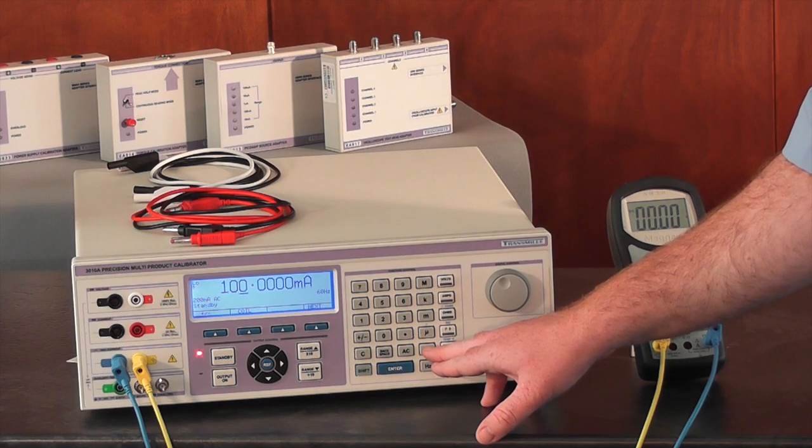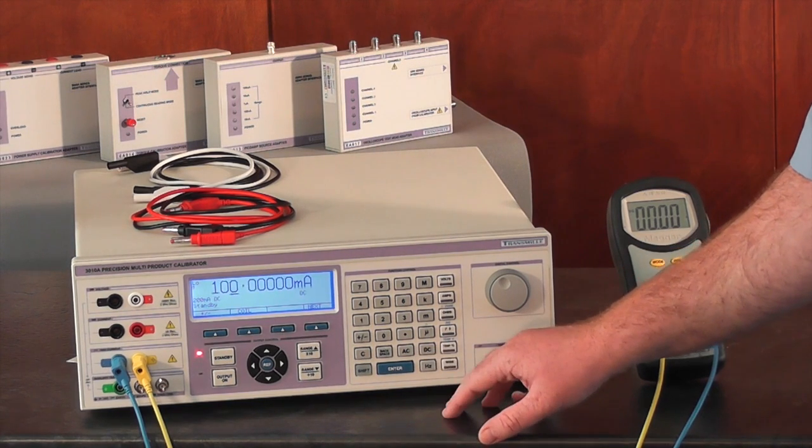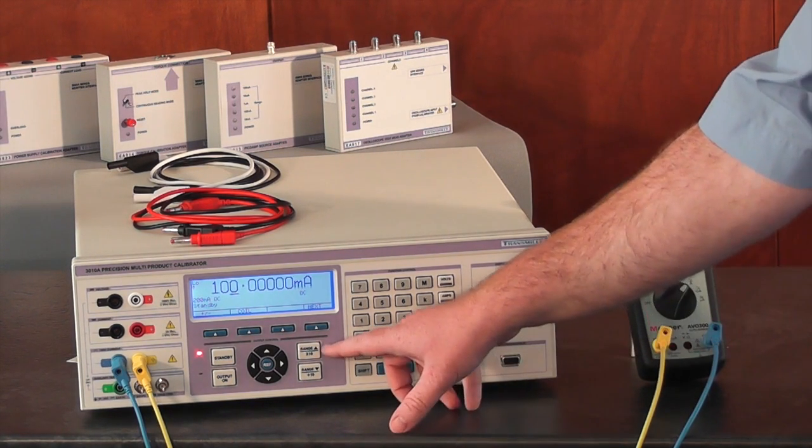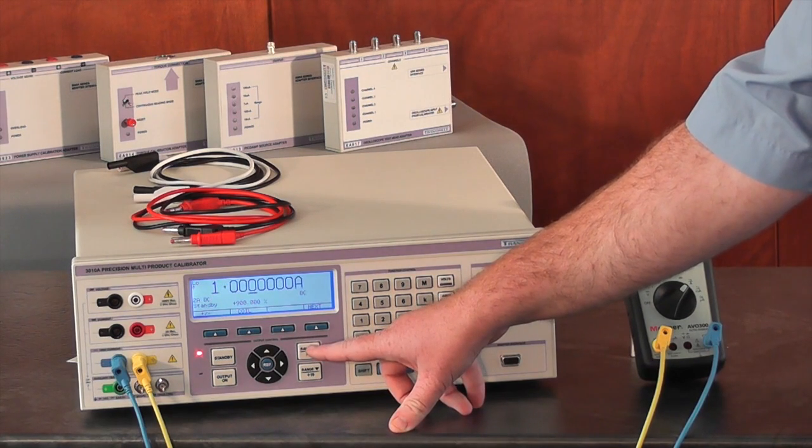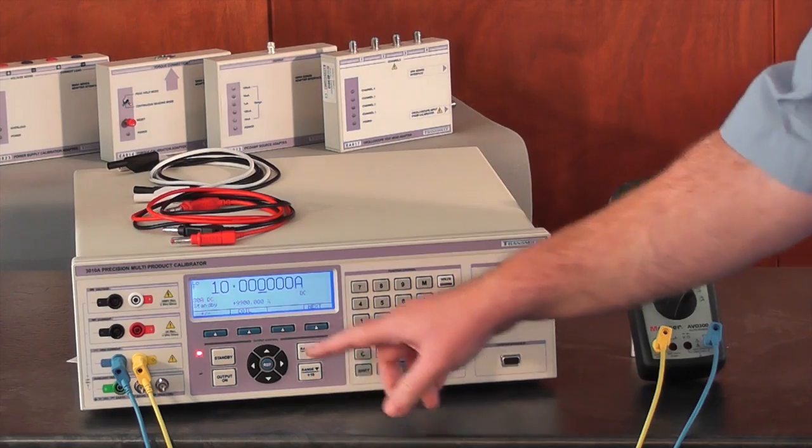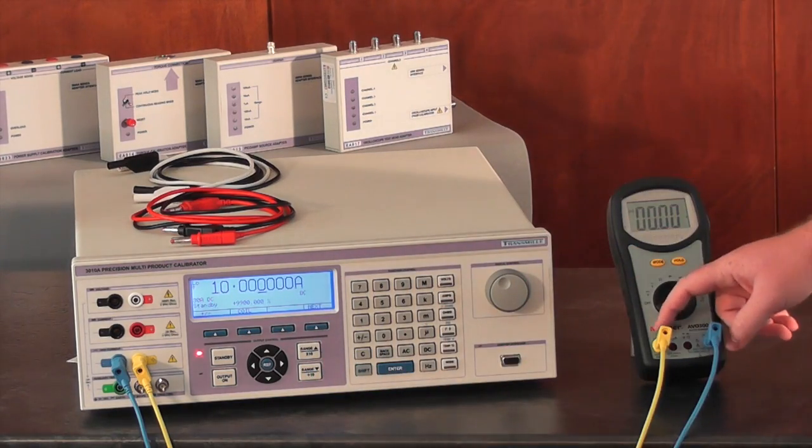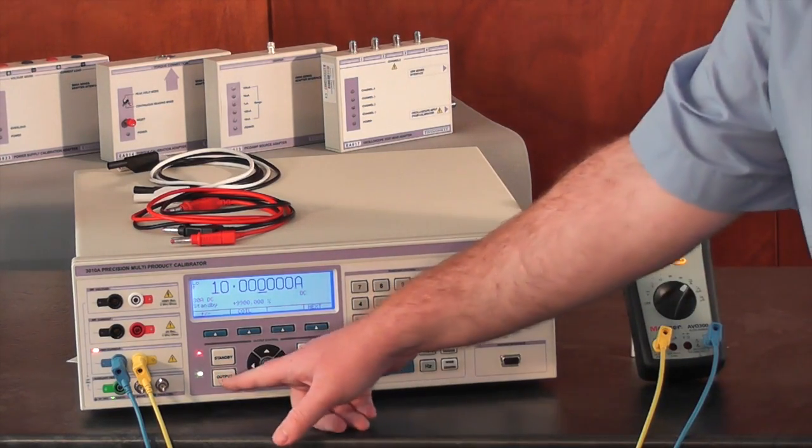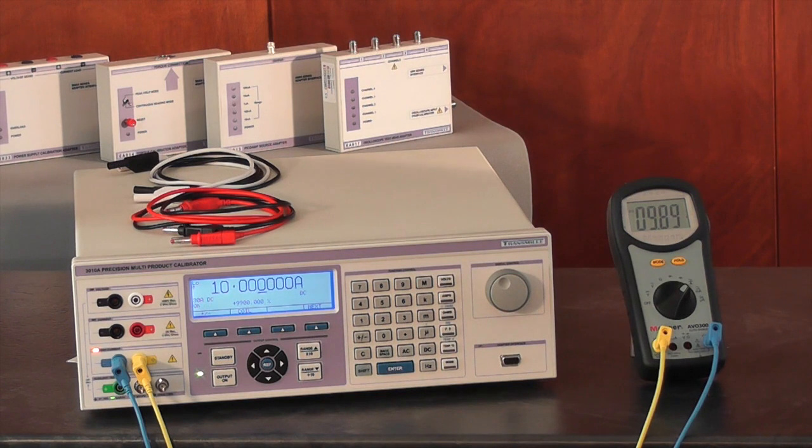We will switch the calibrator back to DC mode and use the range up keys to set a value of 10 amps. After checking the connections are correct, we will press output on. We can now take a recording of the indicated value from the multimeter.